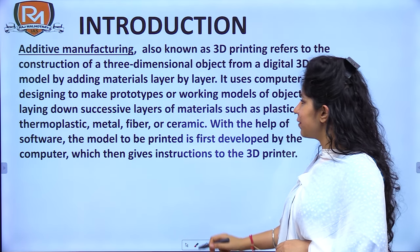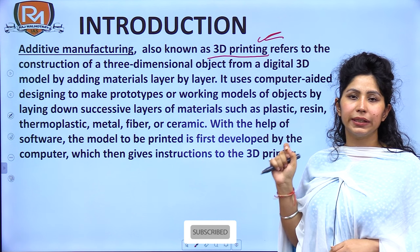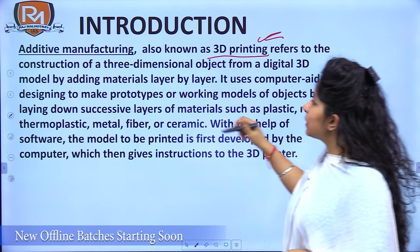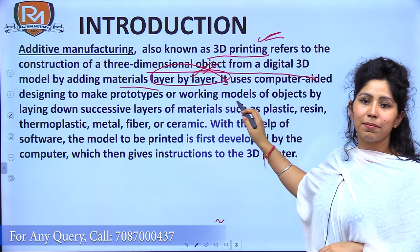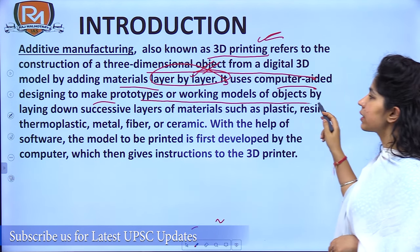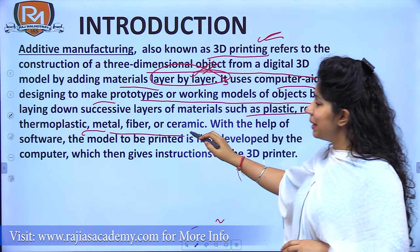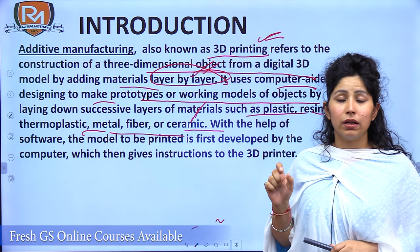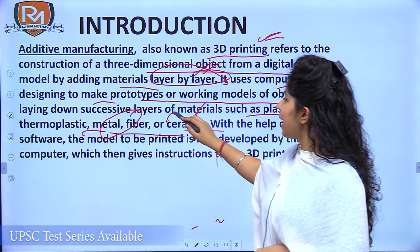Starting with the introduction — additive manufacturing, also known as 3D printing, refers to the construction of a three-dimensional object from a digital 3D model by adding materials layer by layer. This term 'layer by layer' is very important. It uses computer-aided designing to make prototypes or working models by laying down successive layers of materials such as plastic resin, thermoplastic, metal, fiber, ceramic, or alloys.